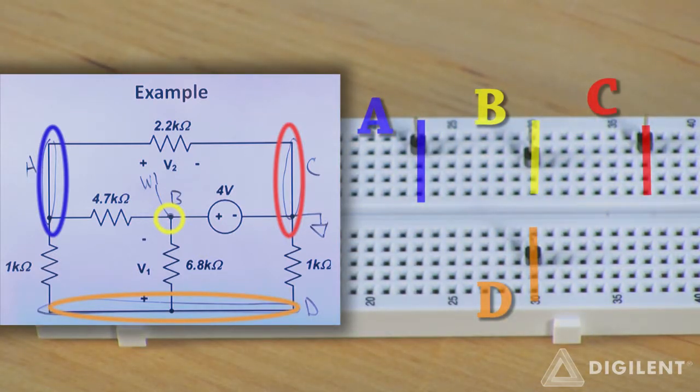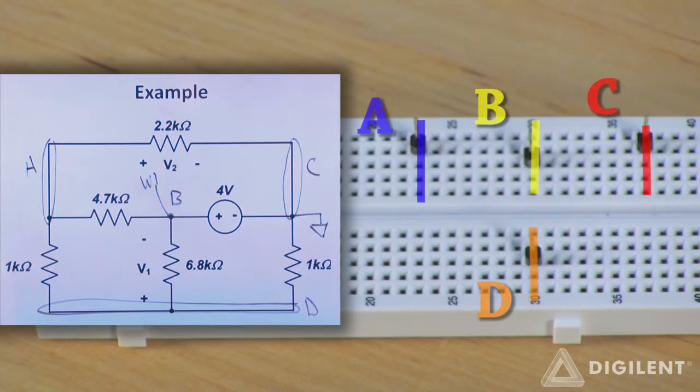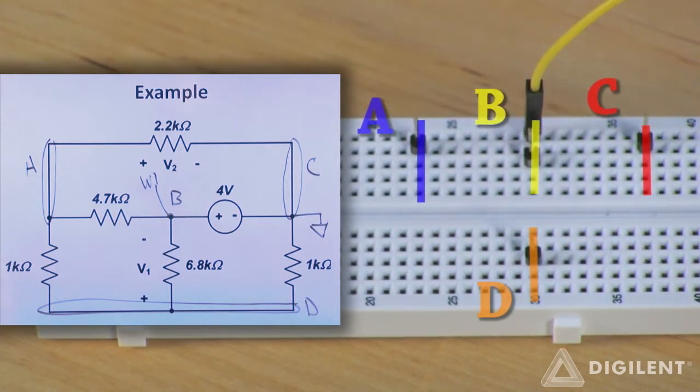Now, let's connect my power supplies and ground. Channel 1 of the AWG, the yellow wire, goes into a hole that's in the node B row, and ground goes in a hole that's in the node C row.